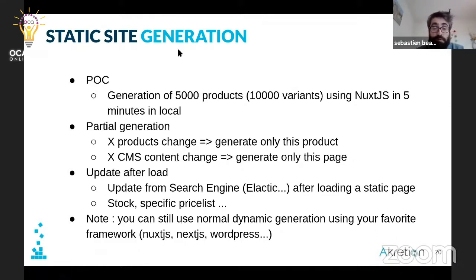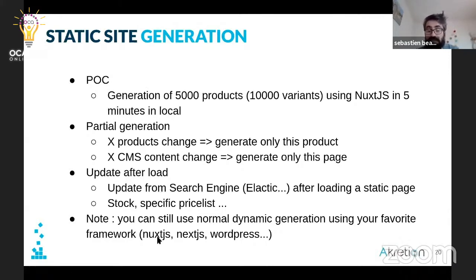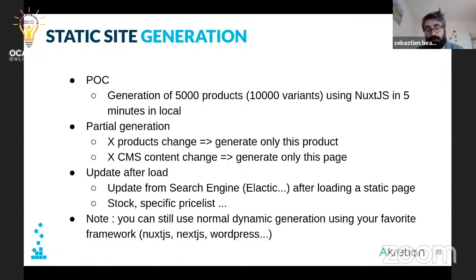If you don't want to use static site generation, it's not an issue. You can still use a framework like Nuxt.js, Next.js, or even WordPress and build on top of the ShopInvider API. Static generation is something we want to push because it gives incredible performance, but it's not mandatory. You can even still use Locomotive.